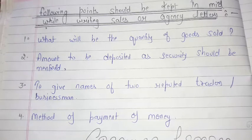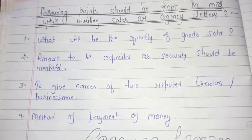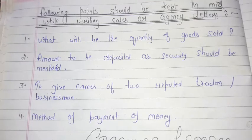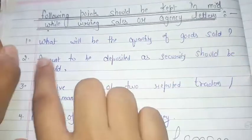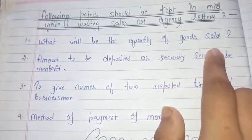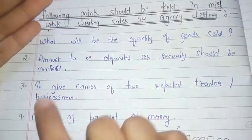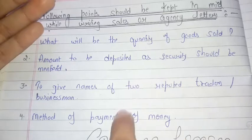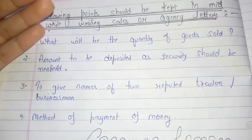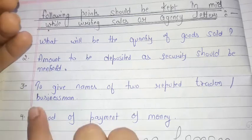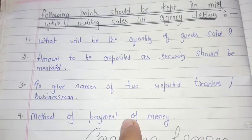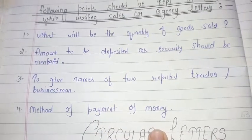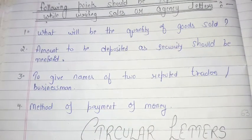We need to keep some points in mind for agency letter or sales letter. The following points should be kept in mind while writing a sales or agency letter: the quantity of goods to be sold, the amount to be deposited as security should be mentioned, give names of two reputed traders or businessmen, the deal with those two reputed businessmen should be written, and the method of payment of money.